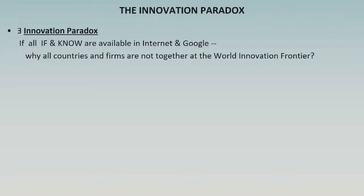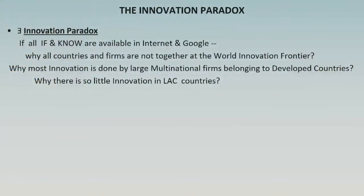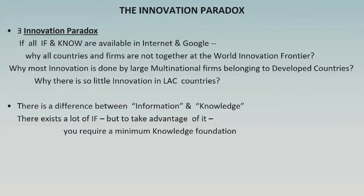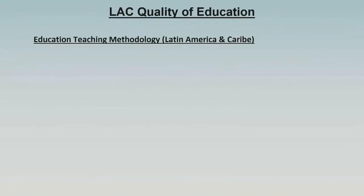There is an innovation paradox: if all information and knowledge are available on the internet, why aren't all countries and firms at the world innovation frontier? Why is most innovation done by large multinationals from developed countries, with so little in Latin America and the Caribbean? The answer: there is a difference between information and knowledge. Like the printing press, many books existed but only learned people could read them. Countries differ enormously in their technological absorption capability.